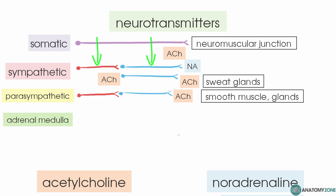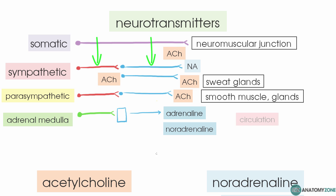The adrenal medulla is actually directly innervated by the pre-ganglionic neurons of the sympathetic nervous system. A pre-ganglionic sympathetic nerve fibre directly innervates the adrenal medulla, which then releases adrenaline and noradrenaline directly into the circulation.